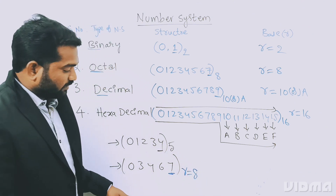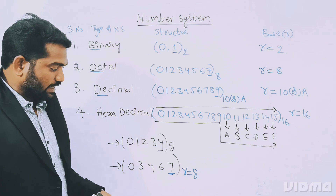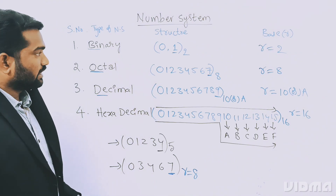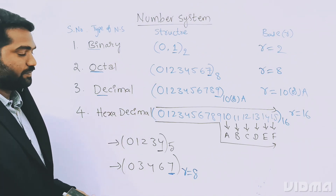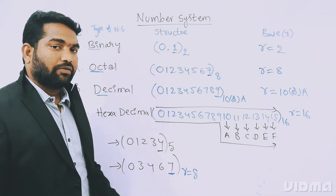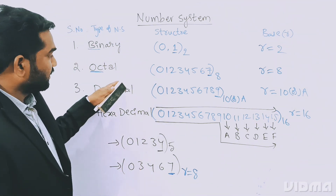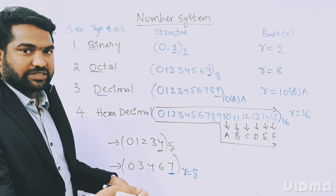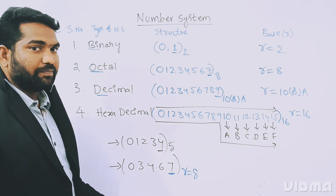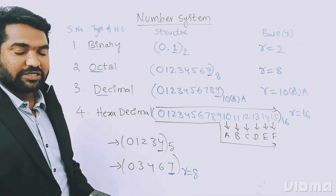So these are the four types of number systems and how to find the radix or base. Let us next understand how to convert from one number system to another — that is, base conversion. Thanks for watching.